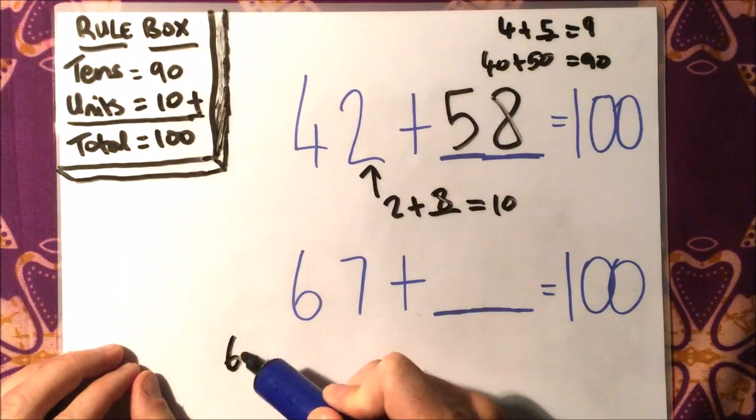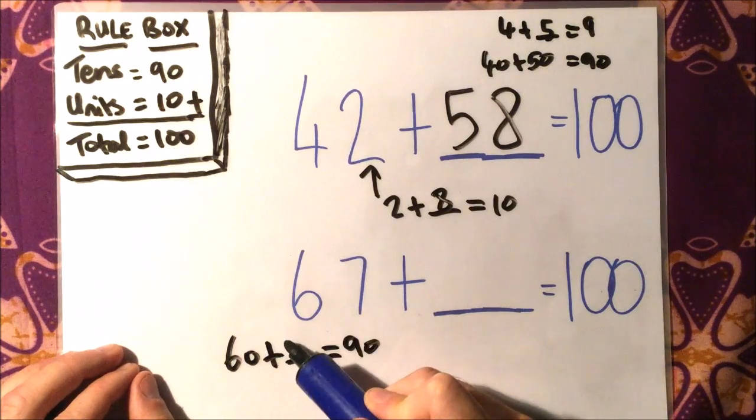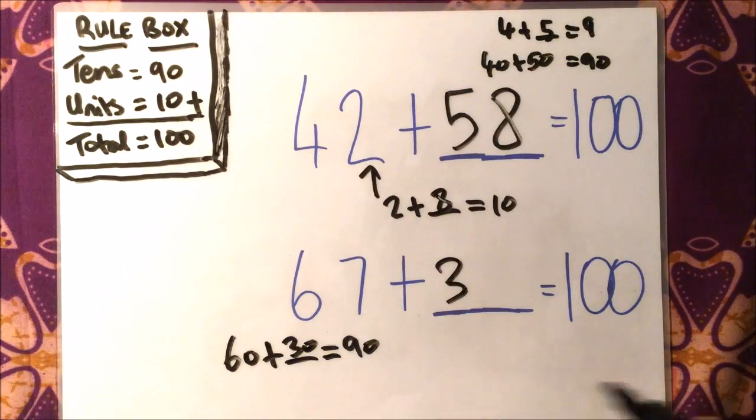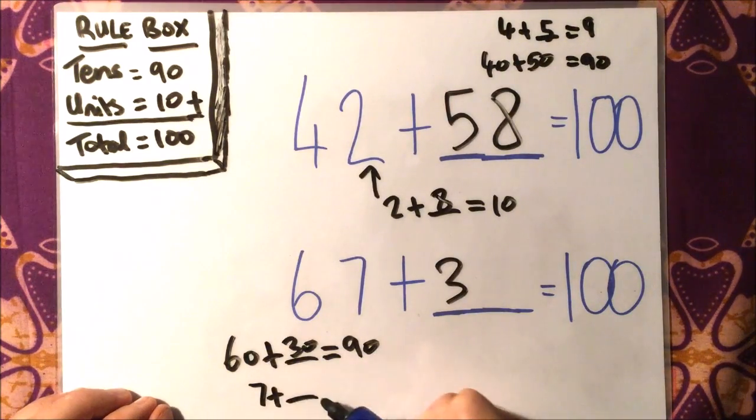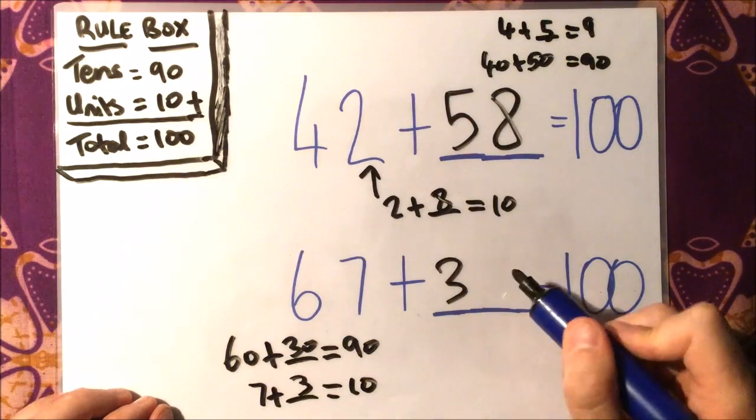I need to add something to 60 to make 90, so that will be 30, so I put 3 tens here. And what do I add to 7 to make 10? I need to add 3, so I put 3 units in.